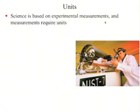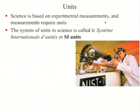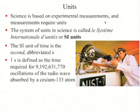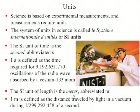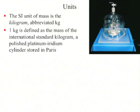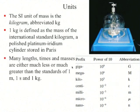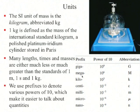Science is based on experimental measurements, and every measurement requires units. The system of units most often used in science is called Le système international d'unités, or SI units. The SI unit of time is the second, defined as the time required for a certain number of oscillations of a cesium atom. The SI unit of length is the meter, defined by the speed of light. The SI unit of mass is the kilogram, defined as the mass of a particular piece of metal stored in France. Many lengths, times, and masses are much greater or less than a meter, second, or kilogram, so we use prefixes to denote powers of ten.